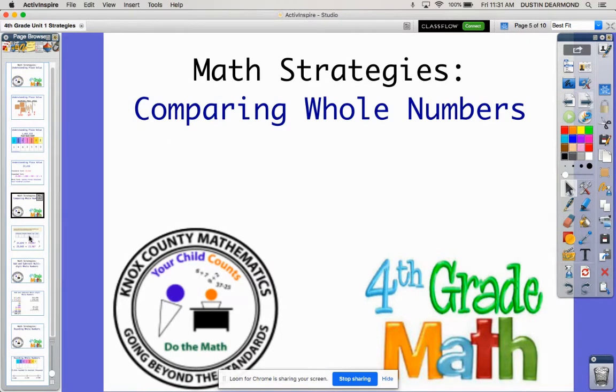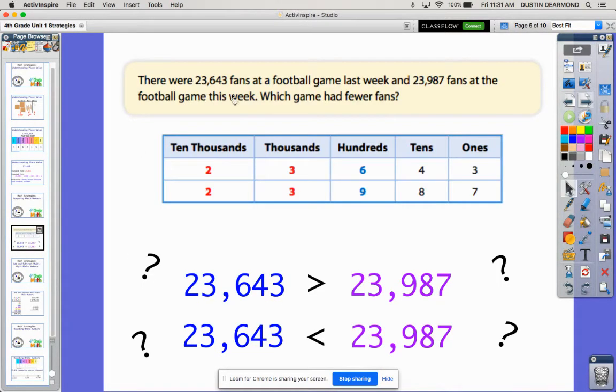So in Ready Math, here's a problem from the book: There are 23,643 fans at a football game last week and 23,987 fans at the football game this week. Which game had fewer fans? That's what we're trying to find out.